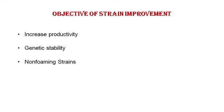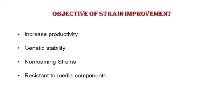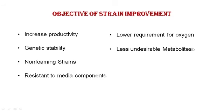It should be genetically stable and non-foaming. Foaming gives contaminants a chance to enter, may cause medium overflow, and necessitates use of anti-foam agents which adds to cost. Strains selected should be non-foaming. They should be resistant to media components, have a lower requirement for oxygen to reduce production costs, and produce less undesirable metabolites to reduce downstream processing costs.